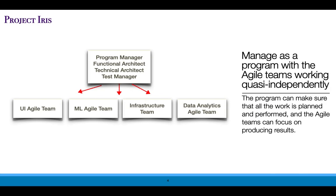A challenge is to coordinate this complex program, yet continue to take advantage of the focus and productivity provided by the Agile structure. The answer we've used in the past is to apply a program structure over the Agile teams. The program manager and architects can sit as a conduit that communicates between the teams and helps keep the structure in place, while each individual Agile project can focus on its work, interacting with the customer and driving out results.